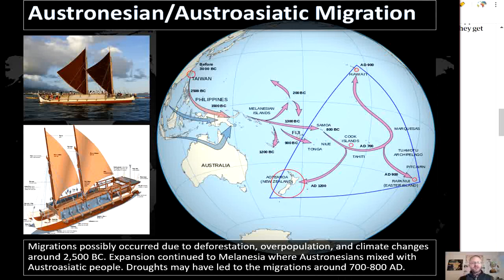The express train model of Polynesian migration argues that between 3000 and 1000 BC, the Austronesian people migrated out of Taiwan, moved through the Philippines, and into New Guinea, arriving in Melanesia by 1400 BC. By 900 BC, the Austronesians would reach western Polynesia, located in Samoa. This theory is supported by the majority of current genetic, linguistic, and archaeological data and is the most popular explanation for this migration.